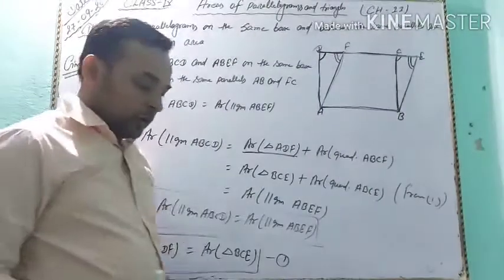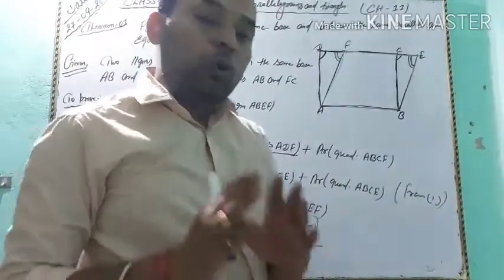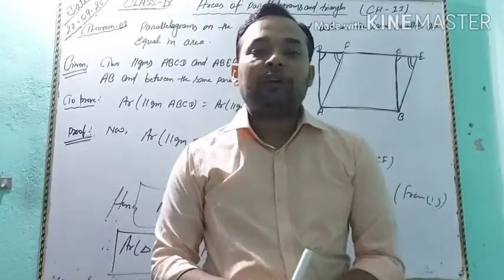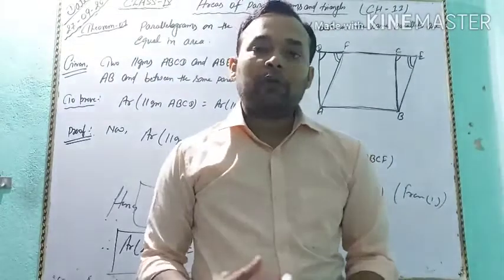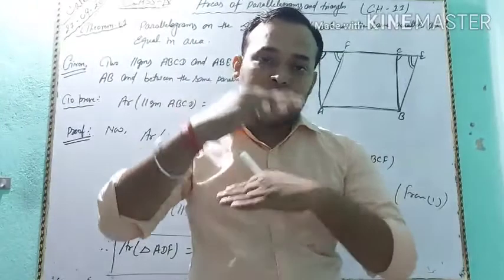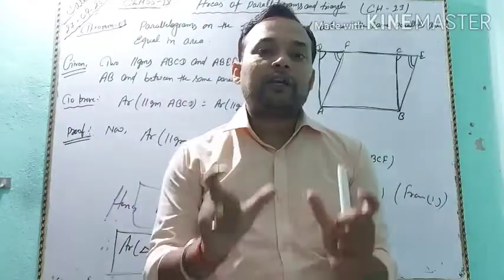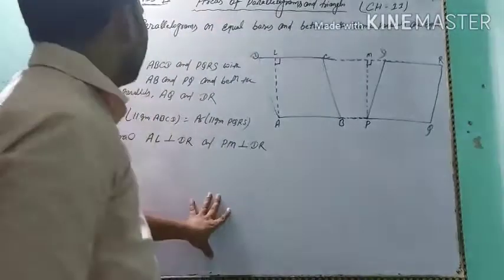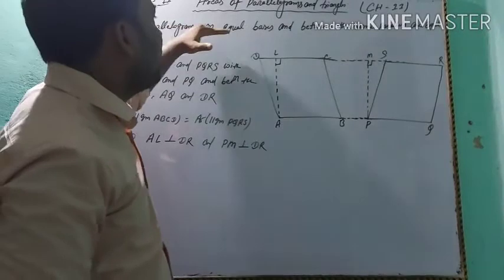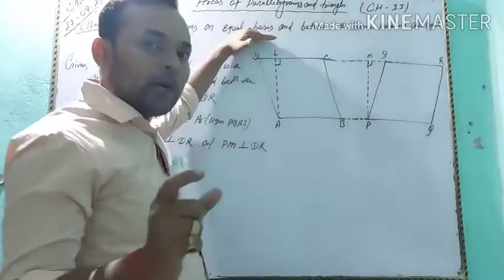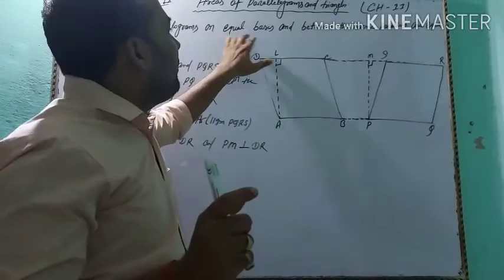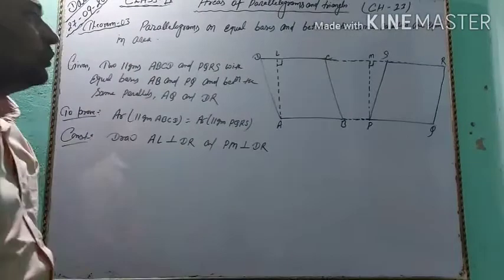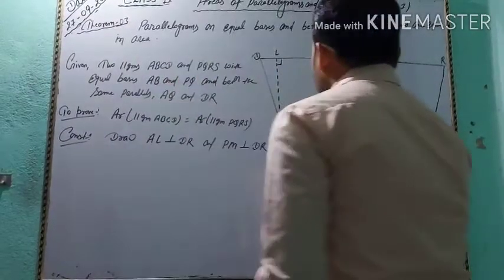Hence, we write: area of parallelogram ABCD is equal to area of parallelogram ABEF. Two parallelograms on the same base and between the same parallels are equal in area.